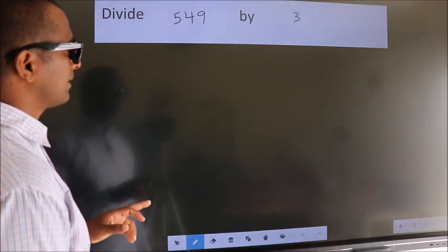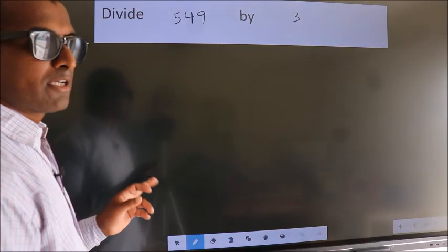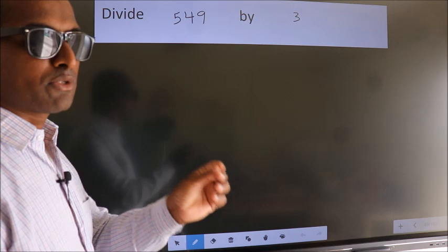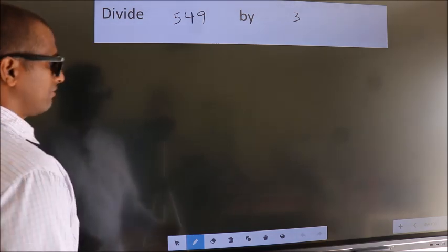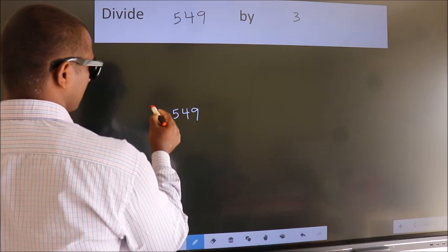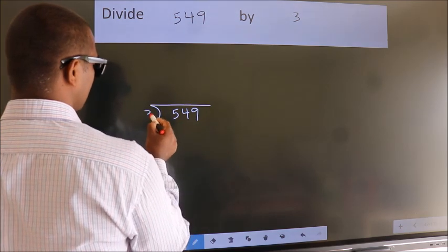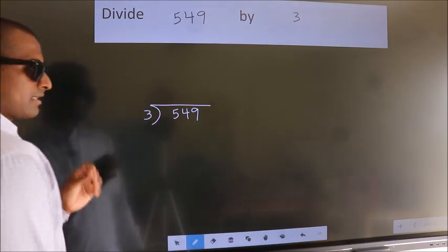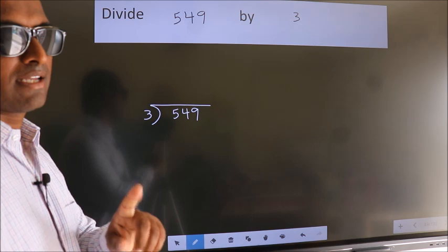Divide 549 by 3. To do this division, we should frame it in this way. 549 here, 3 here. This is your step 1.